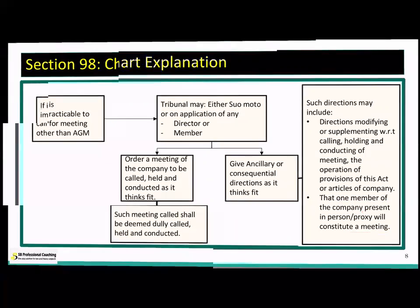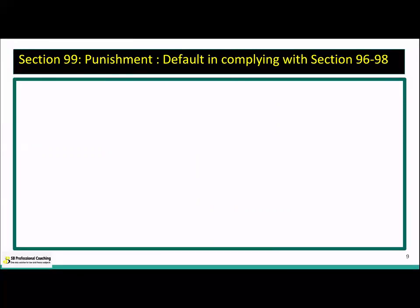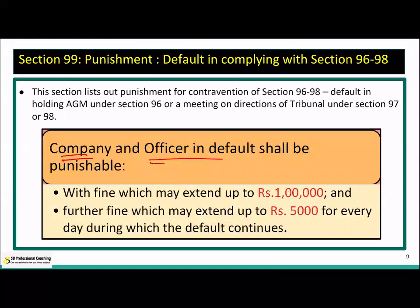This concludes sections 100 and 98. The four scenarios for calling an EGM — board suo moto, board on requisition, requisitionists themselves, and Tribunal — have been completed. Section 99 covers punishment for default in complying with sections 96 to 98. If the company defaults in complying with the order of the Tribunal or contravenes section 96, the company and the officer in default shall be punishable with a fine of up to 1 lakh rupees, and a continuing default fine of up to 5,000 rupees per day.